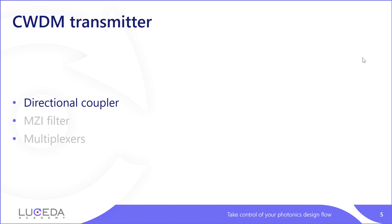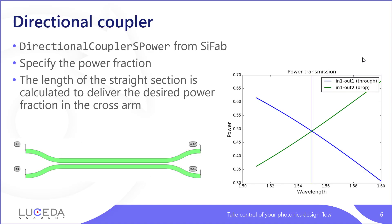The basic building block of a Mach-Zehnder interferometer is a directional coupler. For this example, we are going to use the component called directional coupler spower from SciFab. This is a component where you can specify the power fraction you want to couple into the cross waveguide and then the length of the straight section, which is calculated automatically to deliver the desired power fraction you have specified.